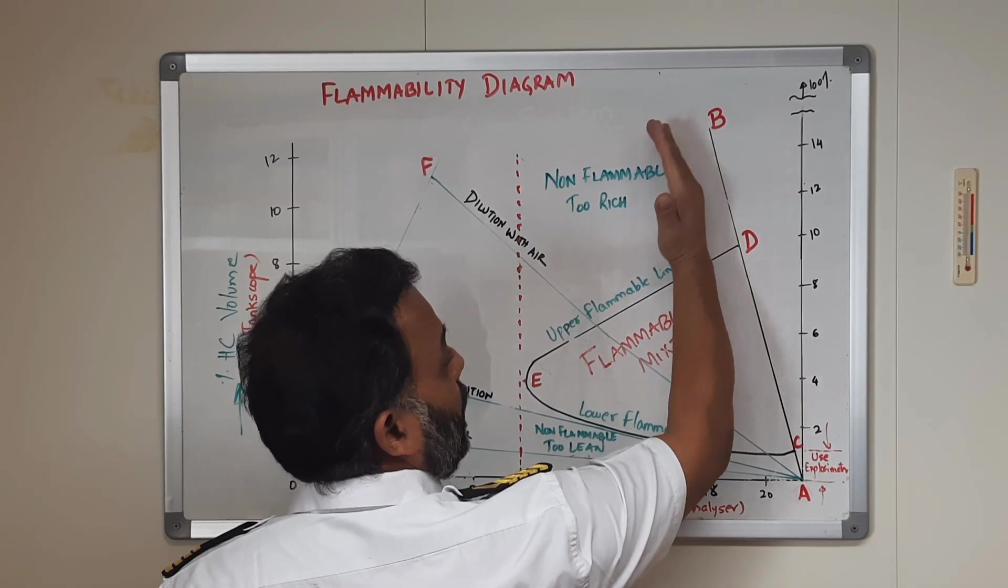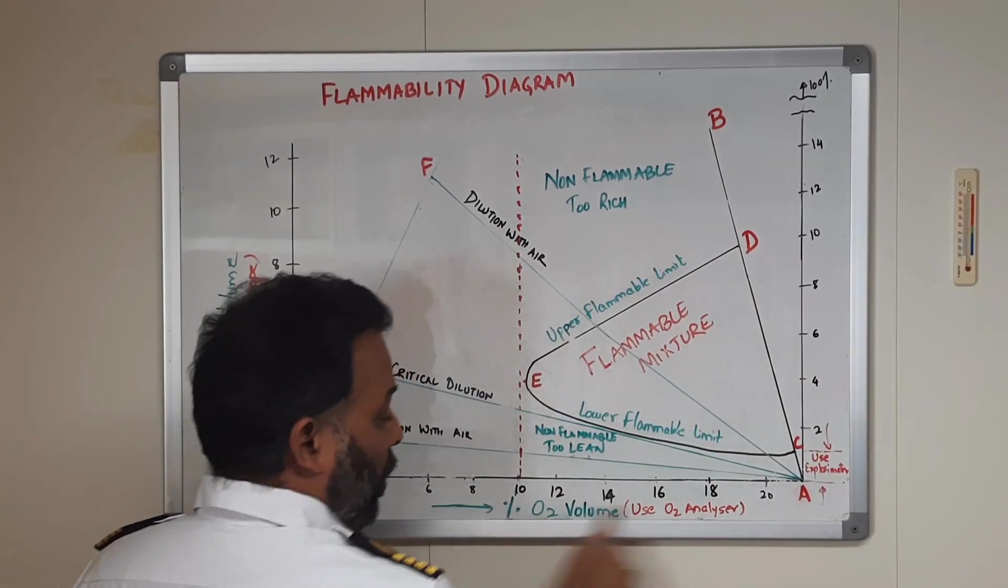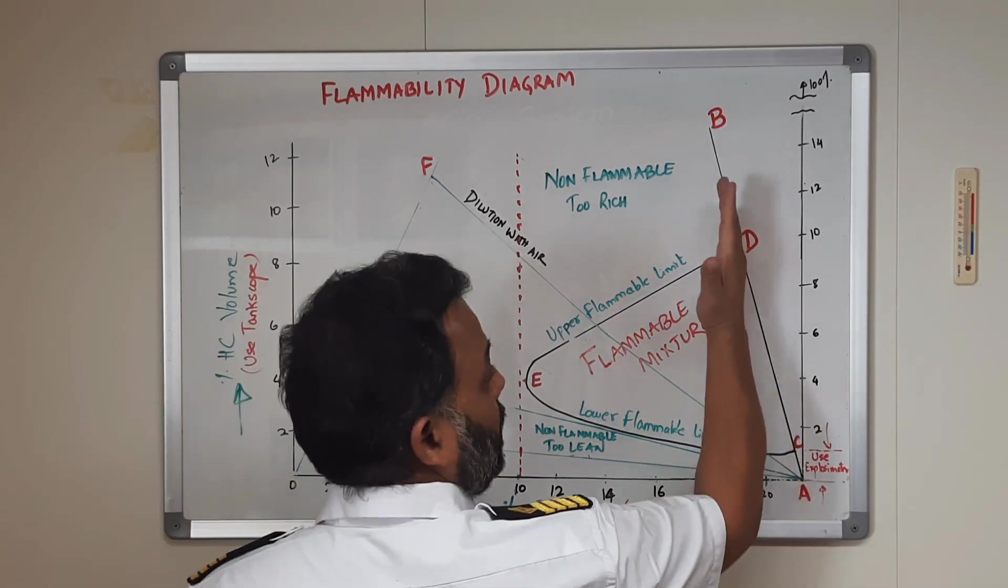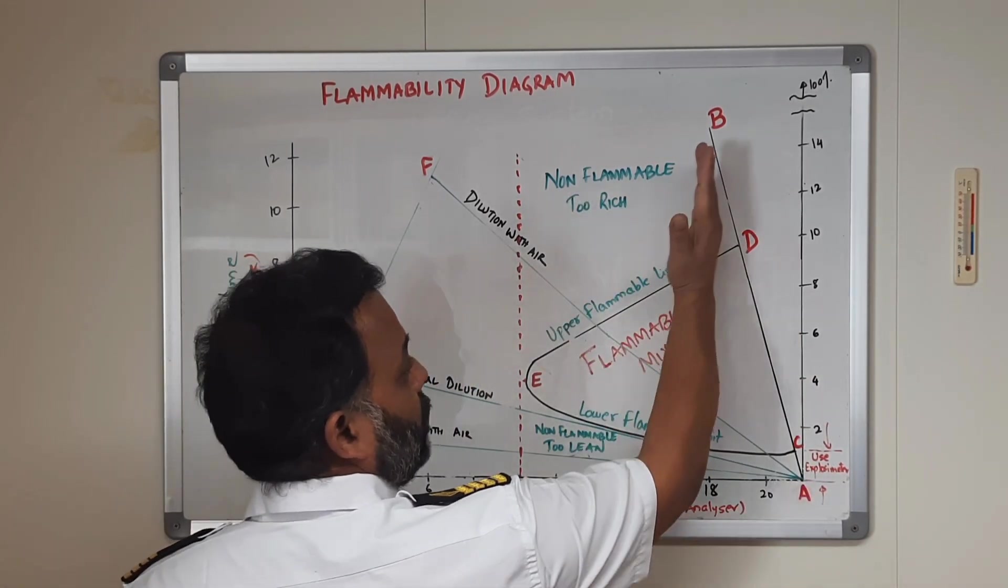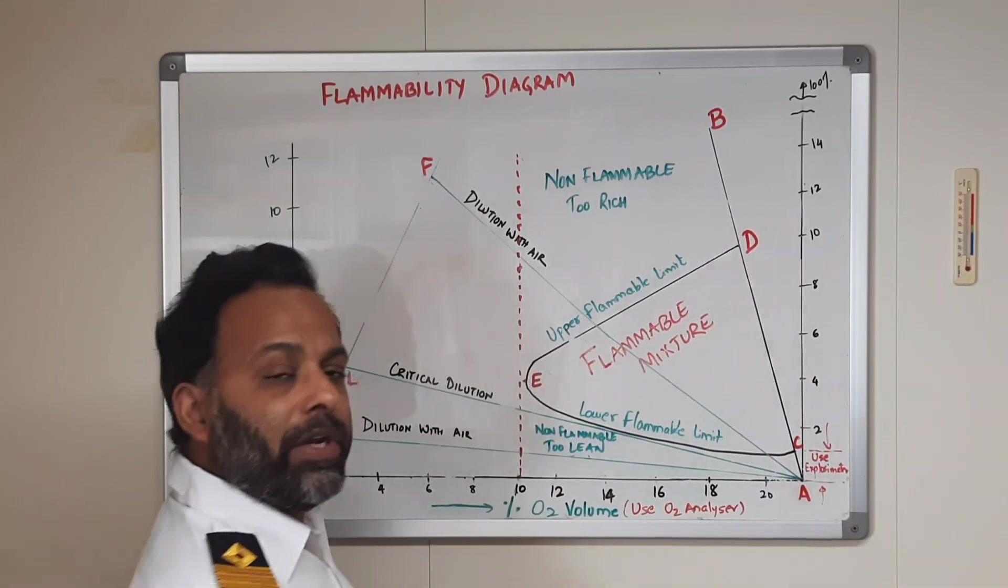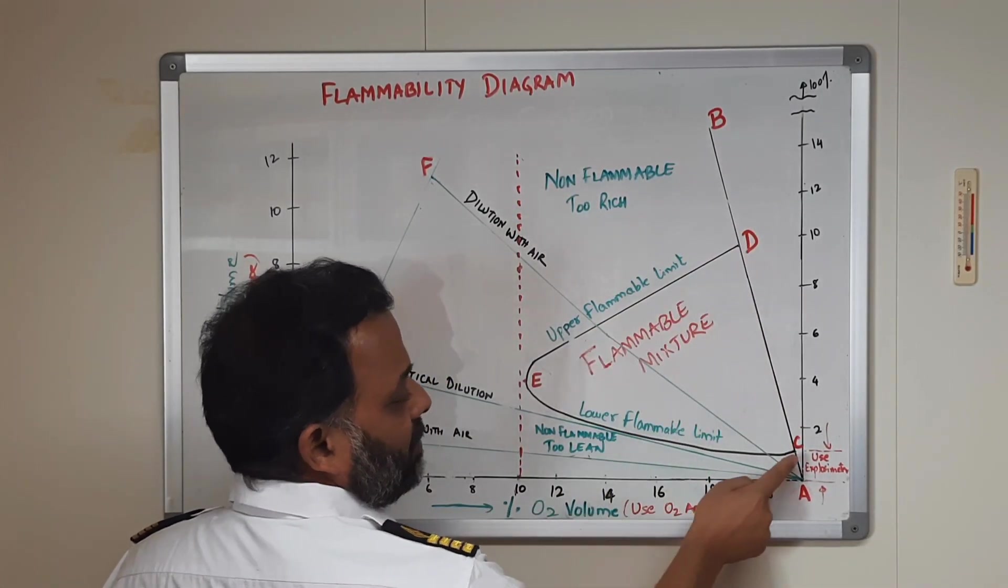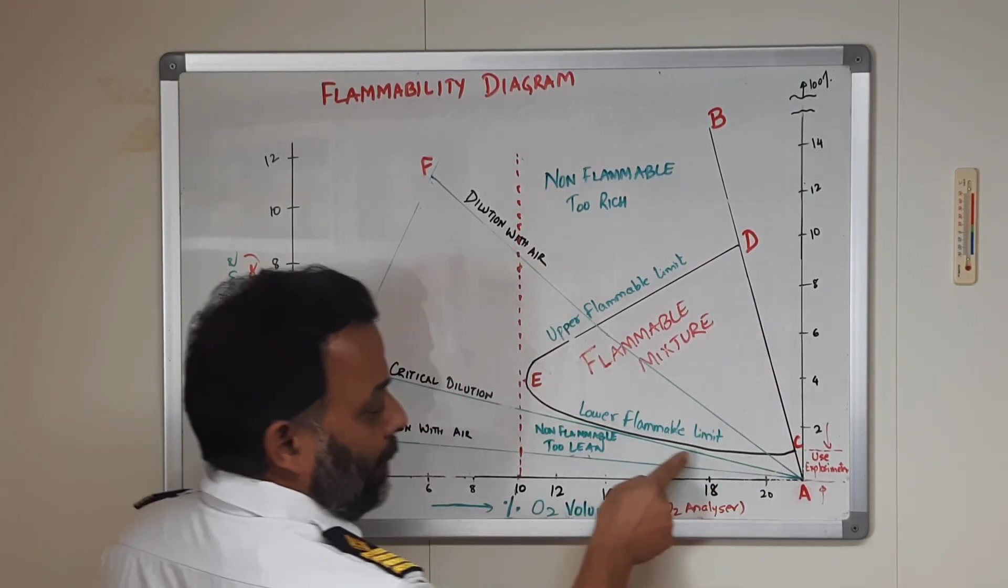As we introduce more inert gas into the system, this oxygen will start going down. As we introduce more inert gas, this upper flammable limit will go down and this lower flammable limit will come up.